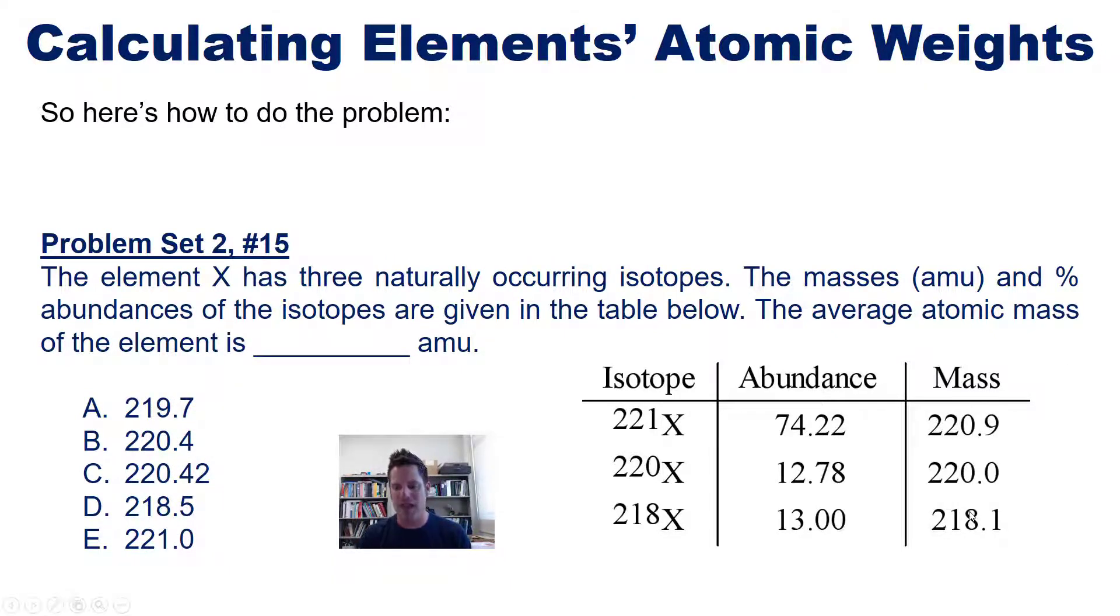To do this problem, we focus on these masses in the rightmost column. We take each mass and multiply it by its percent abundance and then add them all together. For example, the first mass is 220.9. We take 220.9 and multiply it by its percent mass, 74.22. However, we have to express that in a decimal percentage, so we take 74.22 and divide it by 100. So we take 220.9 and multiply it by 0.7422. This is a decimal percentage - the percent divided by 100. This takes into account the fact that 74.22 percent of all atoms of element X weigh 220.9.